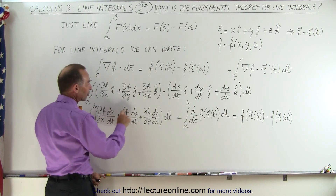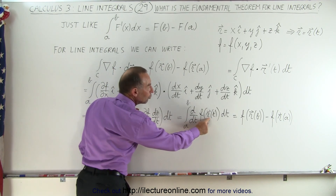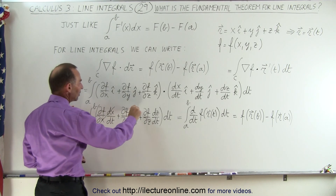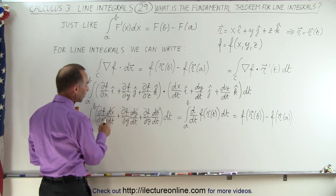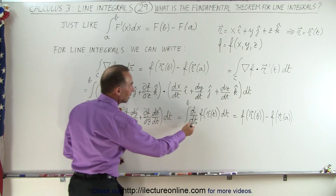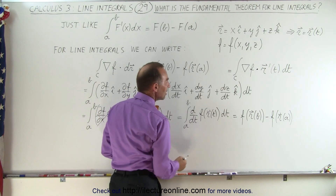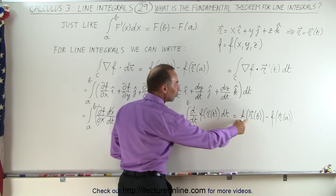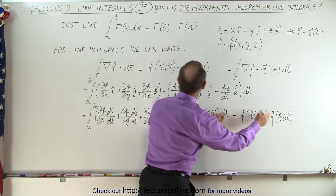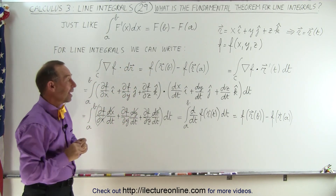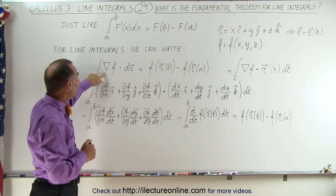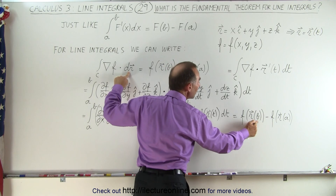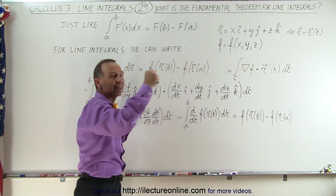We do that for each of the three terms and factor out a d/dt, giving us d/dt of the function f in terms of the parametric variable t, times dt. The dx and Δx, dy and Δy, and dz and Δz all cancel out. We have d/dt of the function times dt, and integrating that — the integral of the derivative — gives us the function evaluated at b minus the function evaluated at a. That is the result of the fundamental theorem for line integrals: the gradient of f dotted with the differential position vector simply equals the function evaluated at the final point b minus the function at the initial point a.